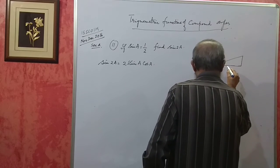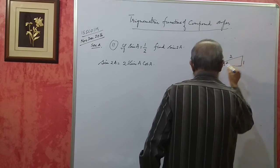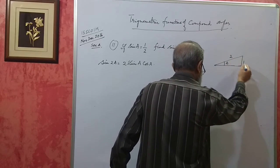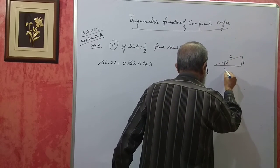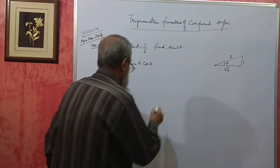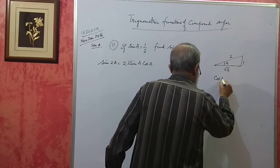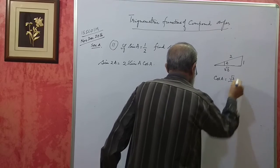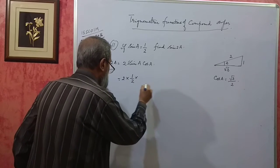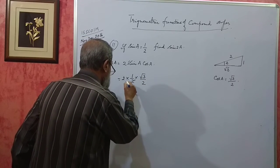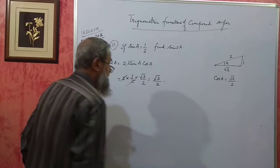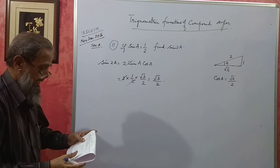Draw a rough figure: sinA means opposite by hypotenuse, so opposite = 1, hypotenuse = 2. The adjacent side = √(4−1) = √3. So cosA = √3/2. Therefore sin2A = 2 × (1/2) × (√3/2). The 2s cancel, giving the answer √3/2. This carries 3 marks.